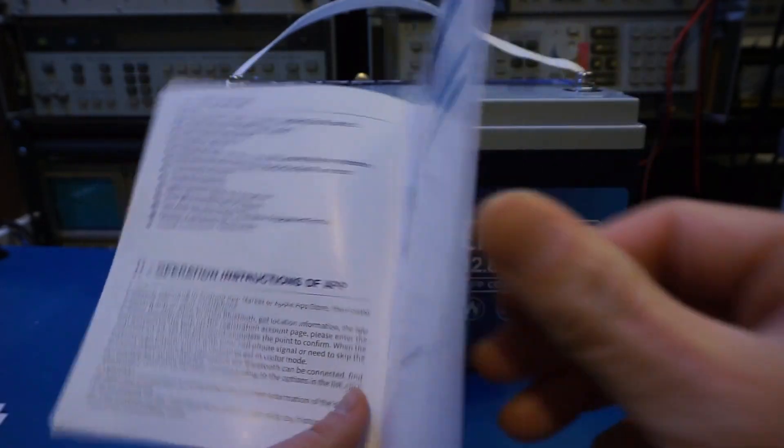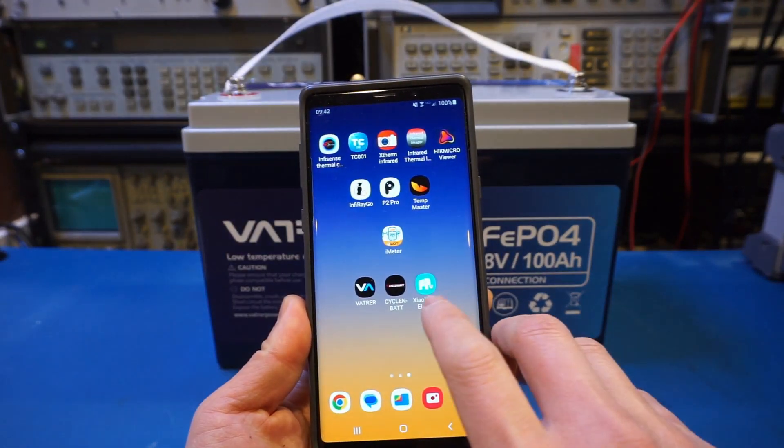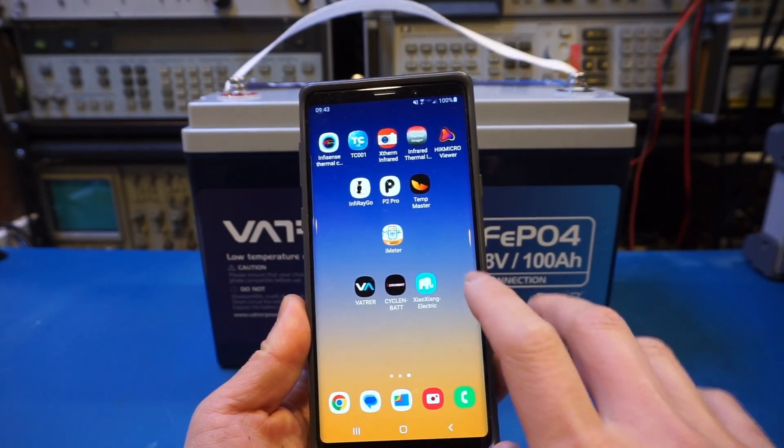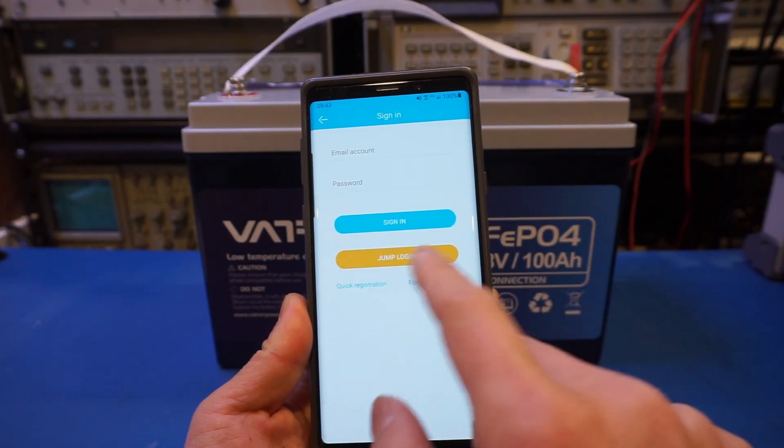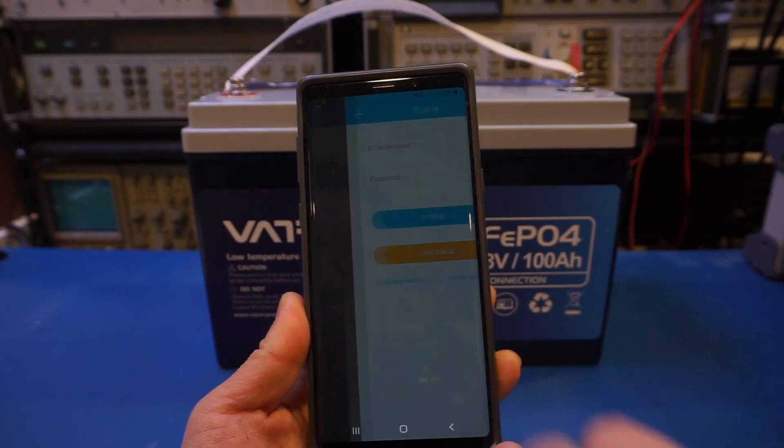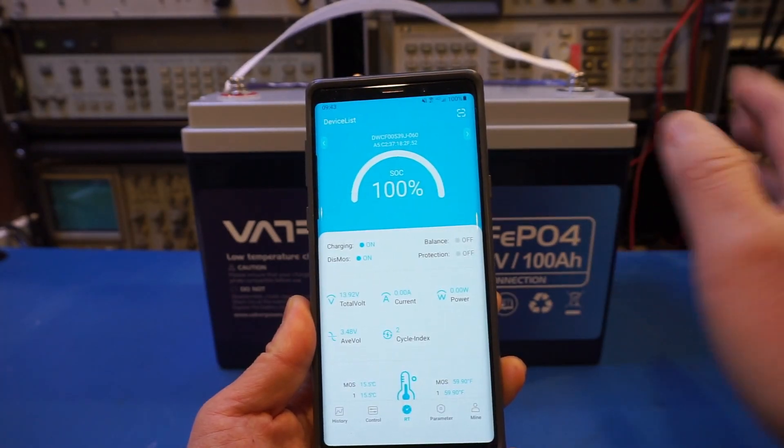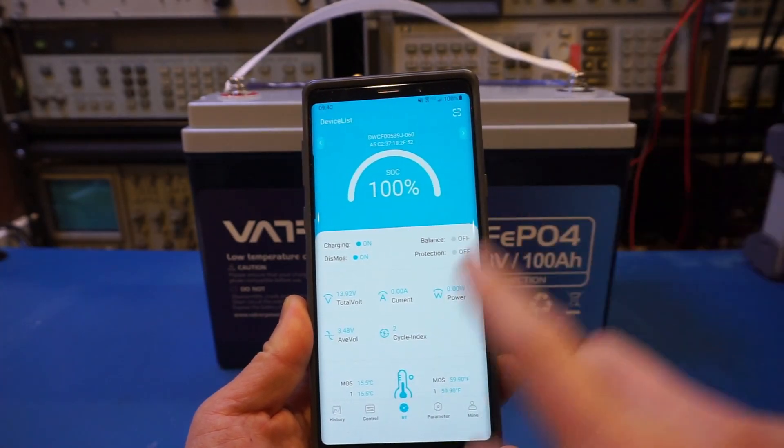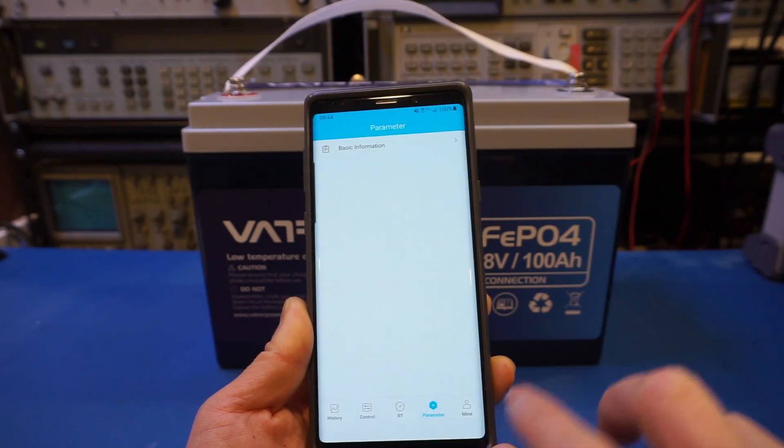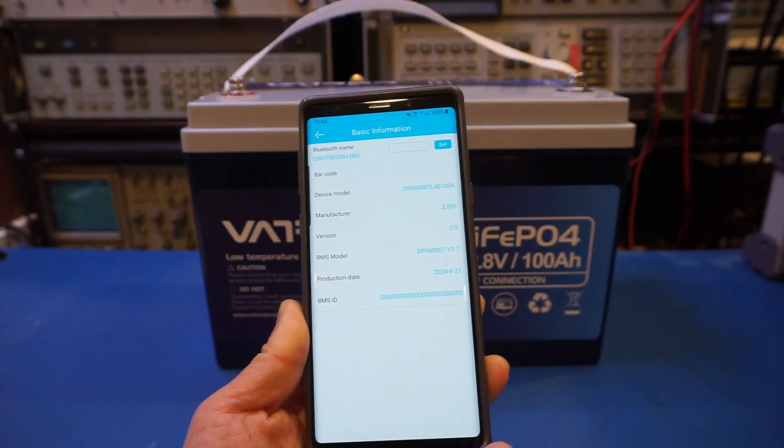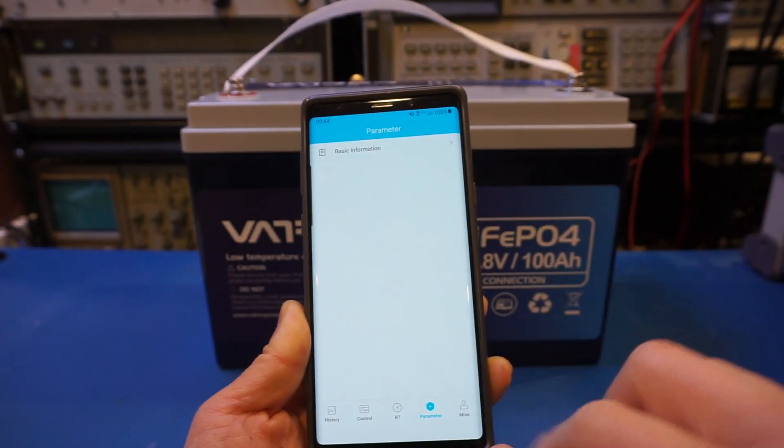Let me show you the app. I downloaded this app recommended by the VATRER manual, but if you look at it, it asks you for login. Interestingly the English is not very good here, it says 'jump login' which means skip login. Anyway, you can skip it and you see a bunch of connected batteries here. This one is the VATRER battery. You can see all the stats of the battery, so pretty good here. Then you can go to parameters and see some of the basic information of the battery, and you can set different names if you have multiple batteries. This is a very handy feature.